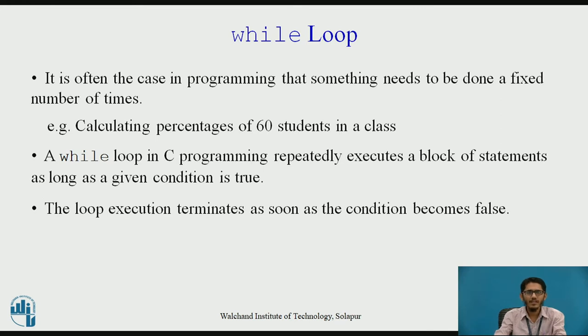It is often the case in programming that something needs to be done a fixed number of times, like for example calculating the percentage of students in a class of 60 students. A while loop in C programming repeatedly executes a block of statements as long as a condition is true, and the loop execution terminates as soon as the condition becomes false. For the loop to continue, the condition needs to be maintained as true.